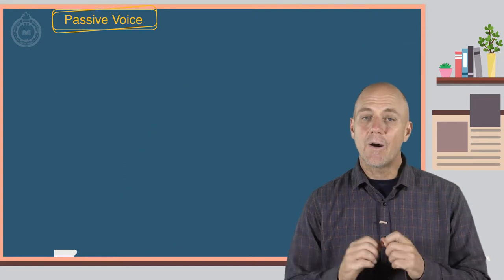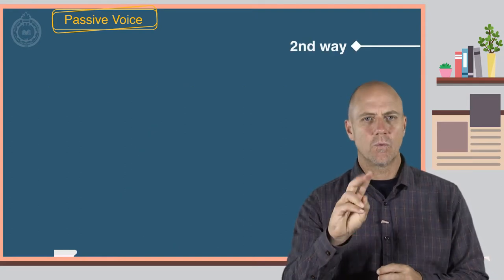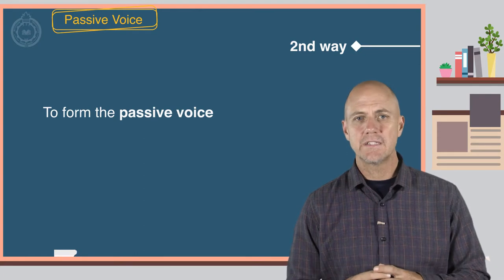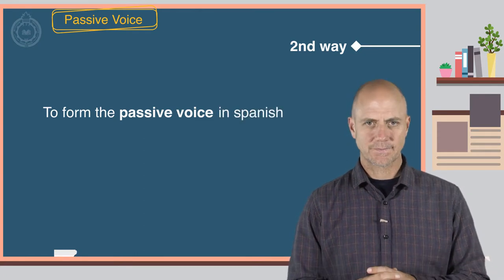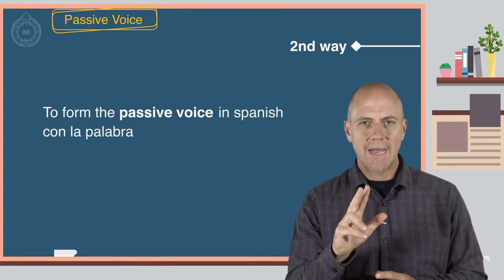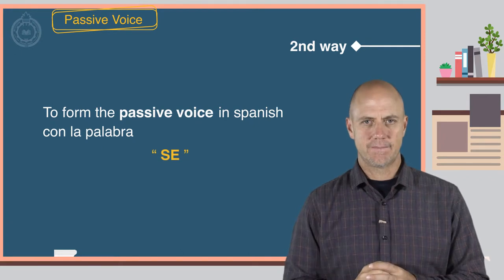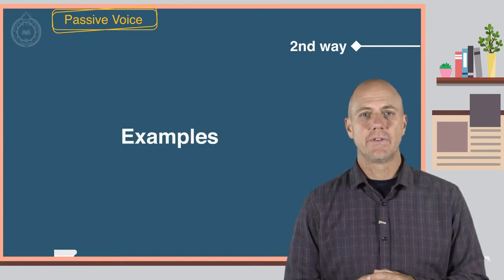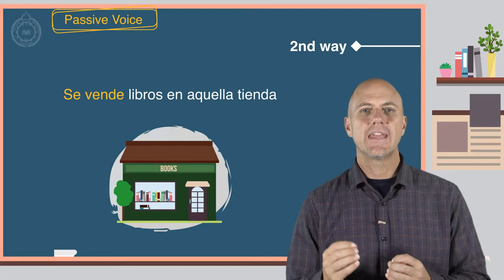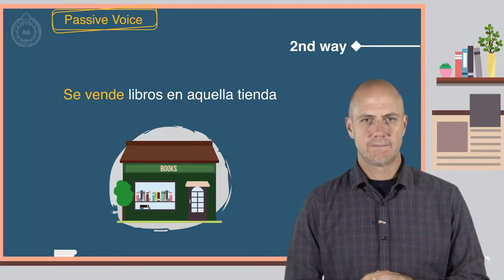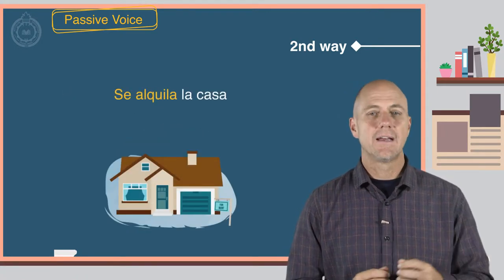Now, here is the second way to form the passive voice in Spanish. Con la palabra se. Here are some examples. Se vende libros en aquella tienda. Se aquila la casa.